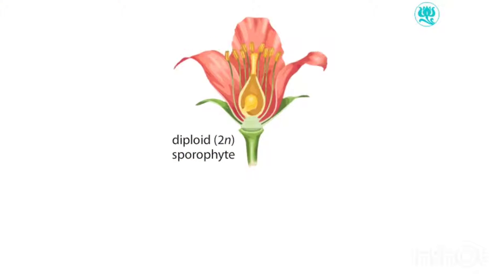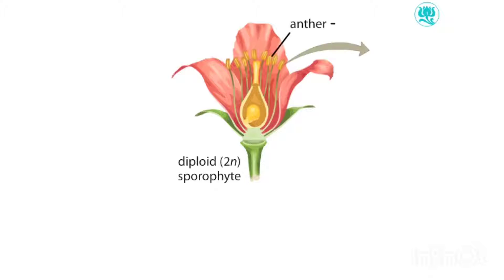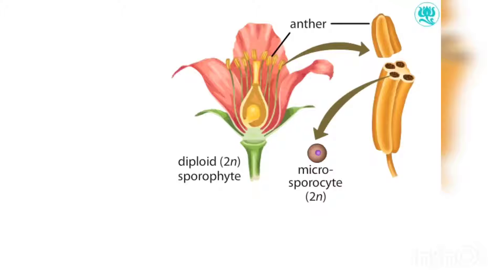Within the flower's male parts, called the anthers, are millions of diploid cells called microsporocytes. These microsporocytes divide by meiosis to produce haploid microspores.